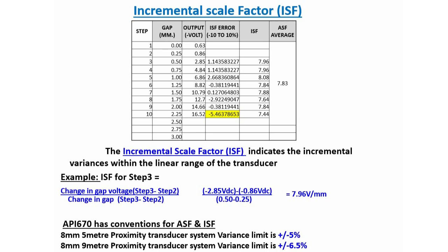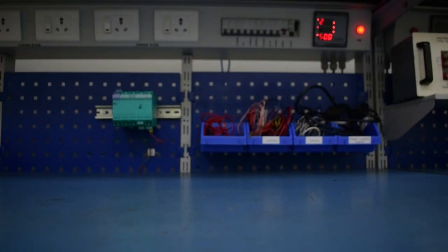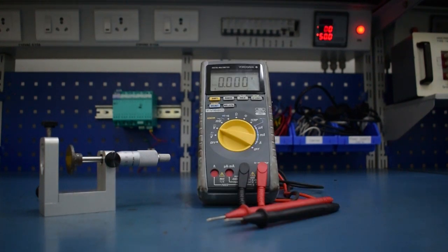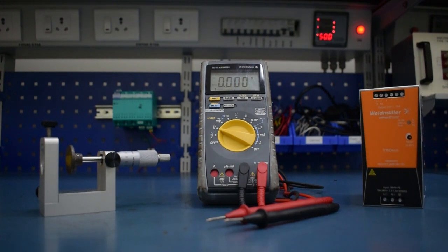To verify the ASF and ISF, we need three apparatus: a micrometer which is available in the TK3 kit, a precise multimeter, and a 24 volt DC source.